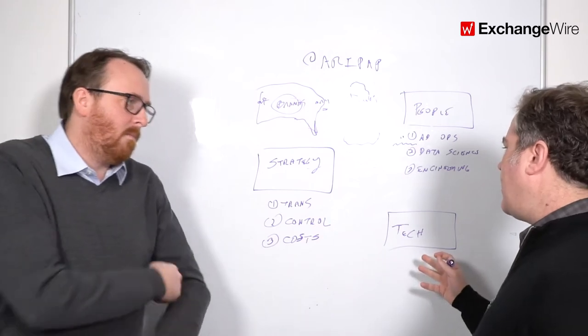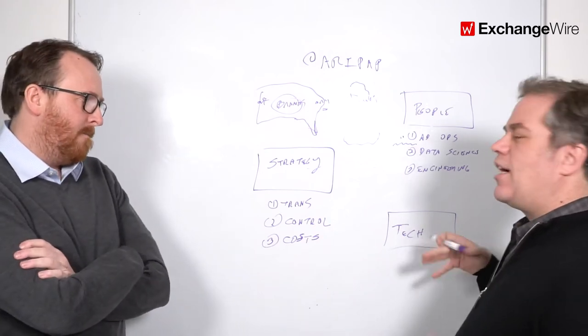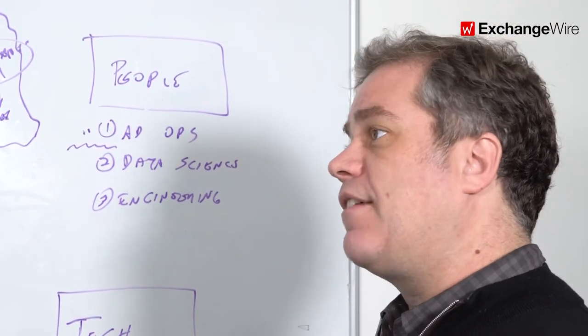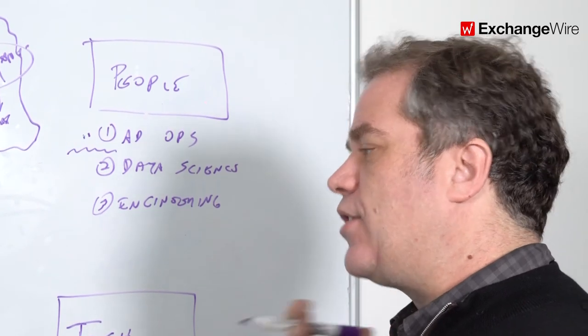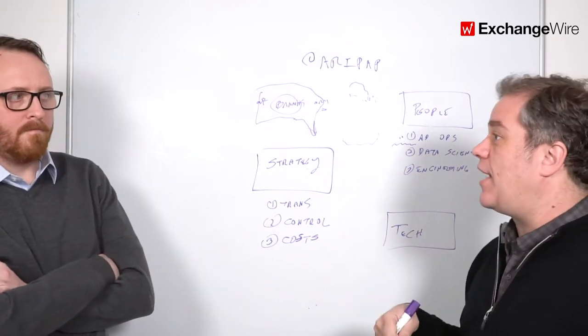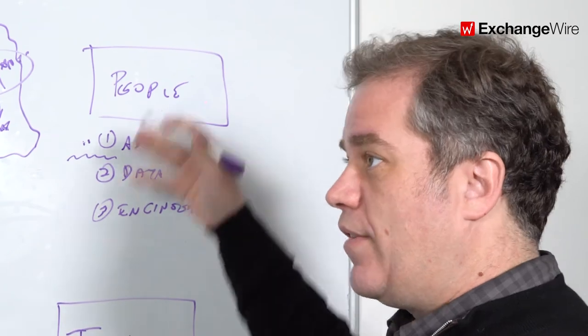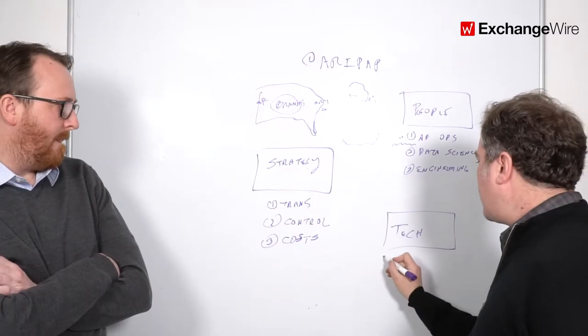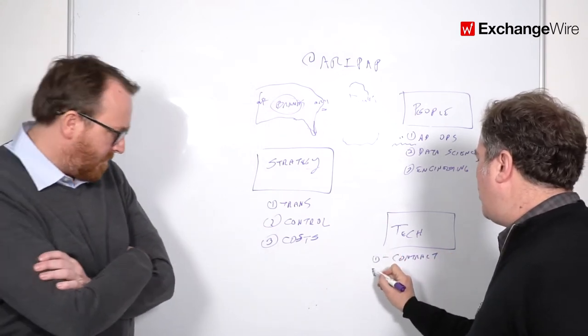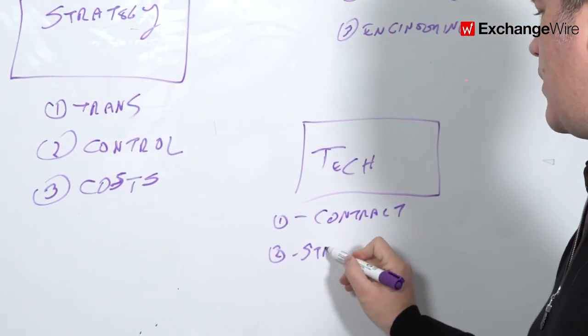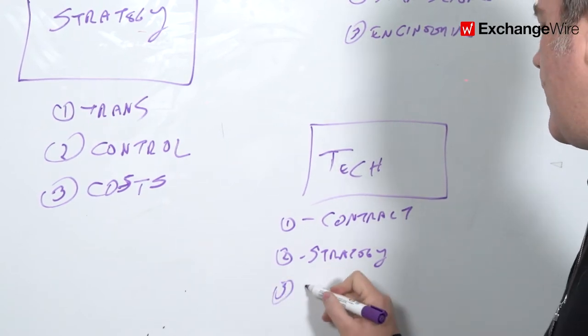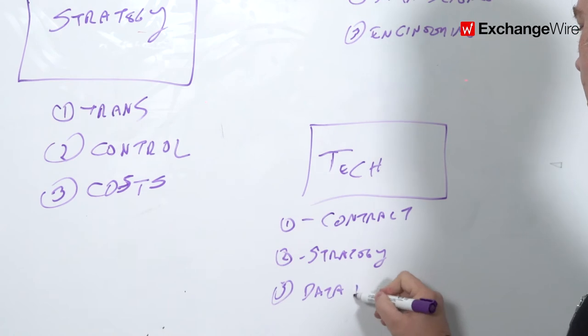You'll see some direct response oriented advertisers go full programmatic, take it all in-house like a Booking.com, like travel, gambling, those kind of entities. But for mainstream marketers in the European market I think you'll still see heavy agency involvement but more control over strategy and more control over tech. Let's talk about the tech piece. That's the last piece of the puzzle. How important is that? Obviously these pieces have to be there before you can do that.